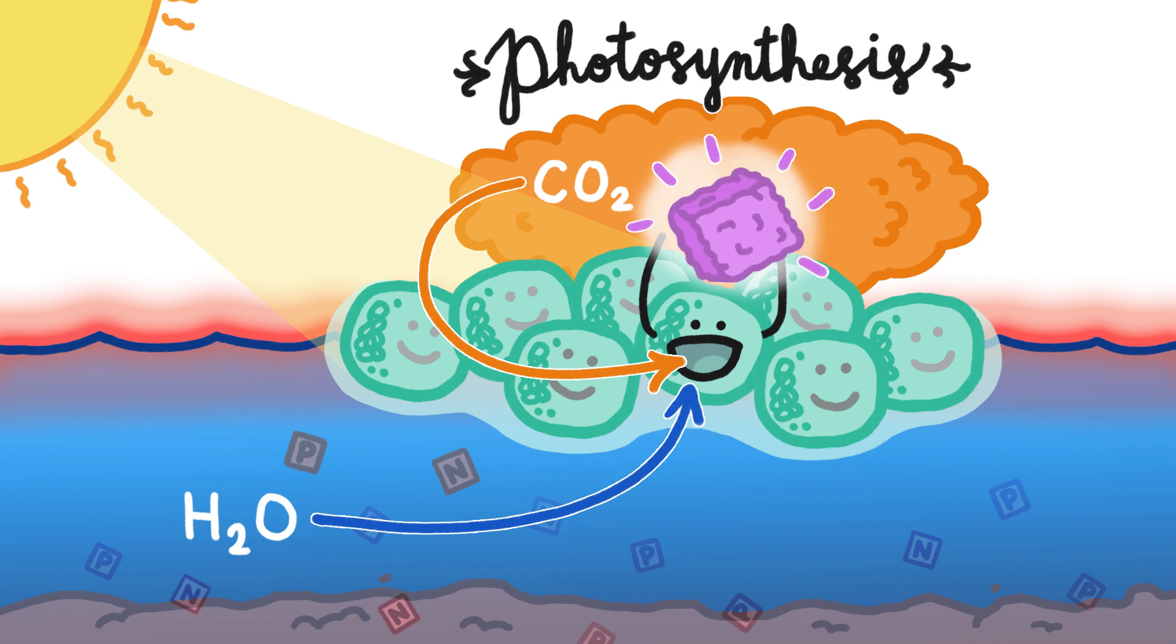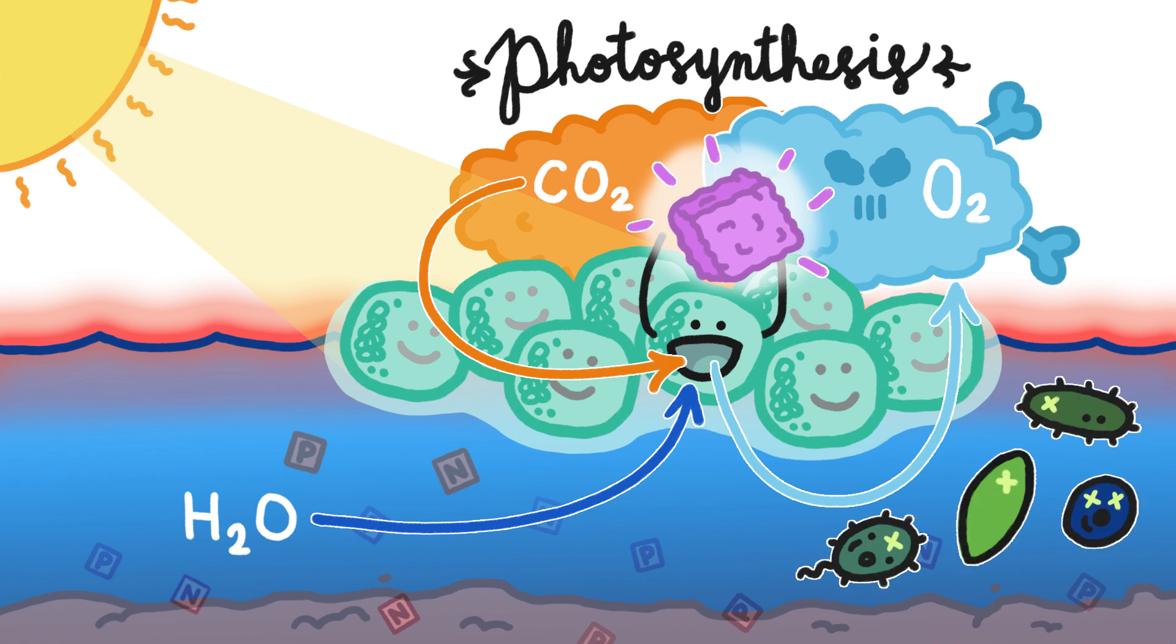But that fancy new photosynthesis also happened to release oxygen, which was poisonous to organisms that had evolved under oxygen-free conditions, which meant pretty much all life on Earth at that time, including most of the cyanobacteria themselves.